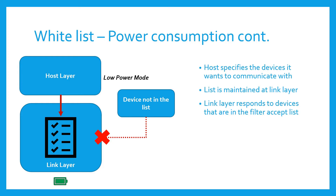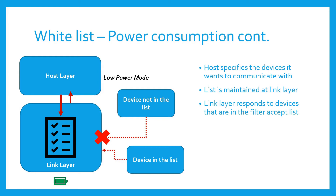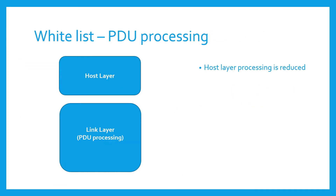Also, the host remains in low power mode until the link layer invokes it when it receives a transmission from a device present in the whitelist. Thus there is a reduction in communication between the host and the controller or link layer, which lowers the overall power consumption of both layers. Additionally, host processing is reduced as the link layer takes care of processing the PDUs.